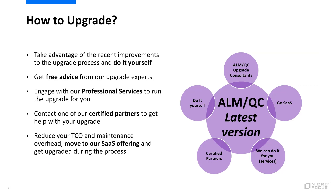Now that we covered the main reasons and motivation for you to upgrade, let's see what is the best way to achieve that. You can take advantage of recent improvements to the upgrade process, such as the ALM Robot, and do it yourself. You can get free advice from our upgrade experts to plan the upgrade. If you'd like external help, you can engage with our professional services group or contact one of our certified partners. The last option, if you would like to reduce your maintenance costs, is to move to our SaaS offering and get upgraded during the routine maintenance and administrative process.